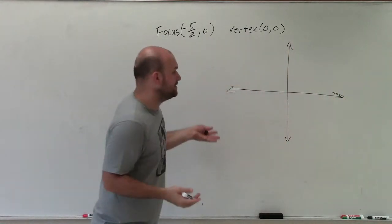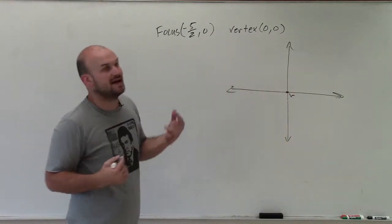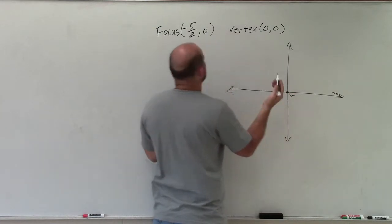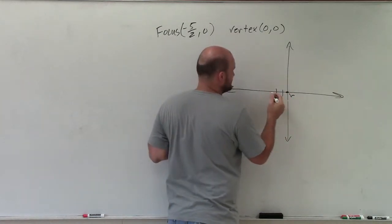So we know the vertex is at 0, 0. That's nice. And the focus is at negative 5 halves comma 0, which is like negative 2.5. Or not like 2.5, it is negative 2.5.